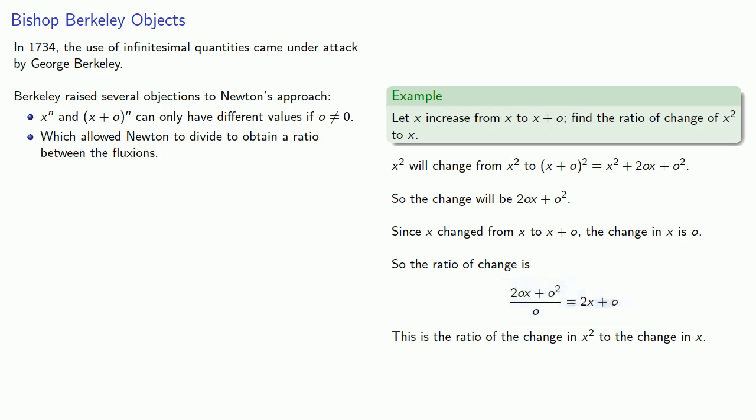But then to find the last ratios, Newton set o equal to zero. And that's possible on the right hand side, but on the left hand side we're dividing by o and o can't be zero. And so the first problem is that o is both zero and not zero.